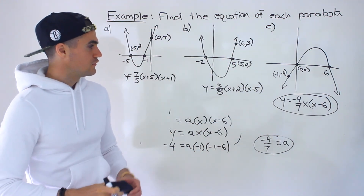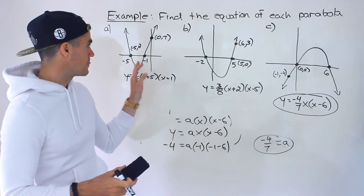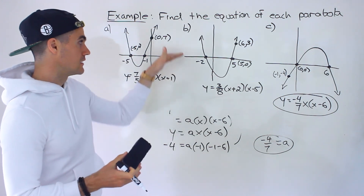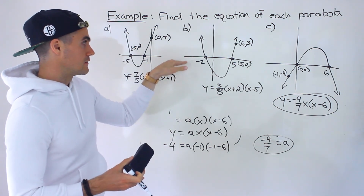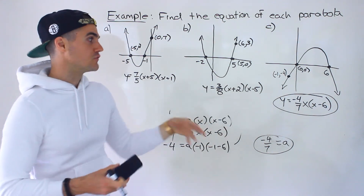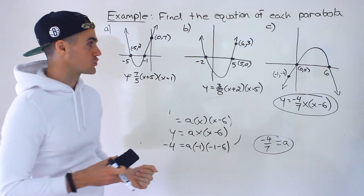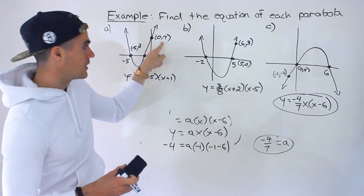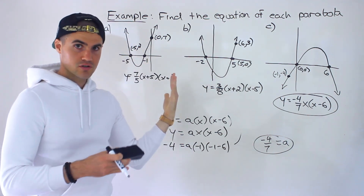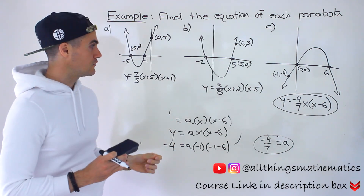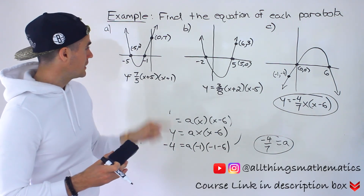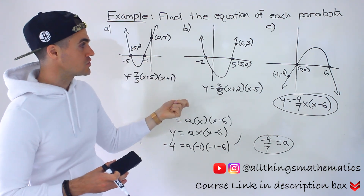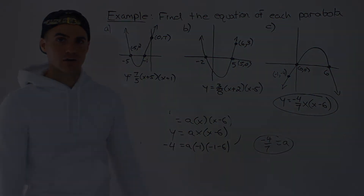So that's the process — fairly simple. On a test, recognize what kind of information you're given: if you're given a vertex and another point, find the equation in vertex form. If you're given the x-intercepts and another point, find the factored form. Your teacher may state which form to use, but if not, you need to recognize which one applies.